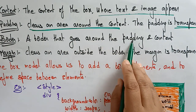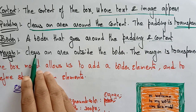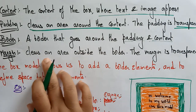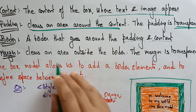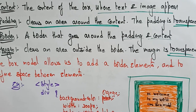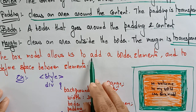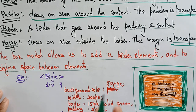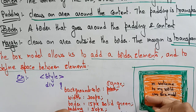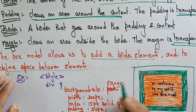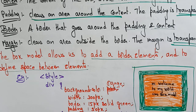Border: a border that goes around the padding and content — it just displays a border. And margin: it clears an area outside the border. So outside the border it also clears, just like padding, but the margin is outside the border. The margin is also transparent. The box model allows us to add border elements and to define space between the elements — what type of border you want, the bold border, different color border, design border — and to define how much space between borders, margins, and padding.